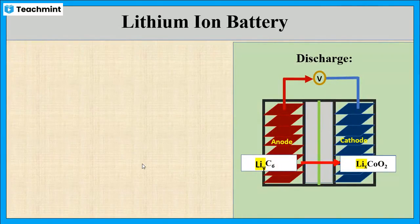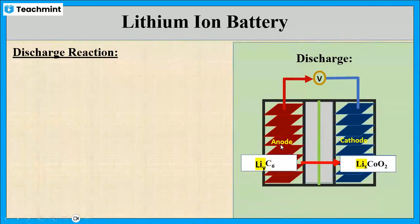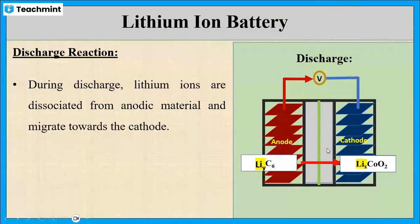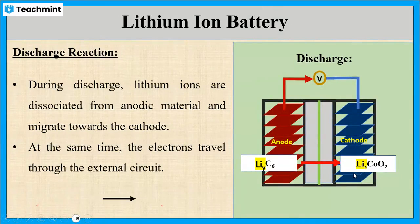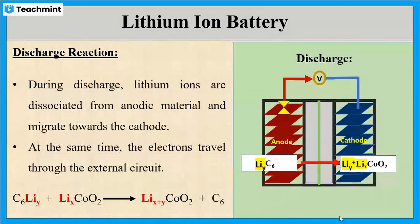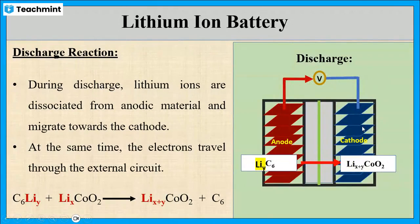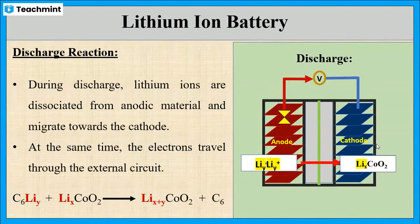Similarly, during discharging of the battery, whatever lithium is present in the anode along with graphite in the form of C6LiY will dissociate and go towards the cathode through the electrolyte solution, forming Li(X+Y)CoO2. At the same time, the liberated electrons travel in the external circuit to produce electrical energy. When all the lithium ions have moved back from anode to cathode, the battery is fully discharged and needs to be charged again.